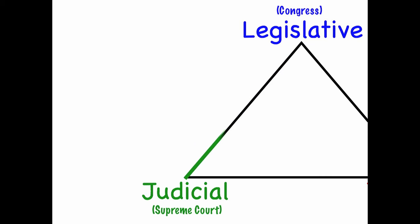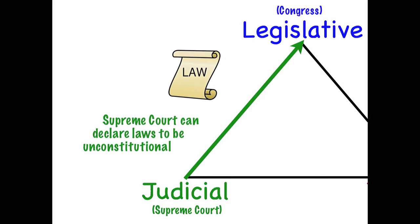The Supreme Court has power over Congress because the Supreme Court can declare laws to be unconstitutional. This means that when Congress creates a law that violates the Constitution, the Supreme Court has the power to take that law away.